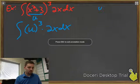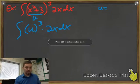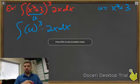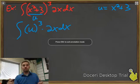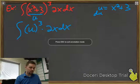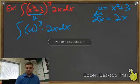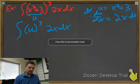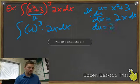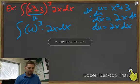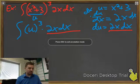Let's take u — remember u is x squared plus 3 — and take the derivative of u with respect to x. So du/dx equals 2x, and differentials can be moved around, so I can multiply both sides: du equals 2x dx.